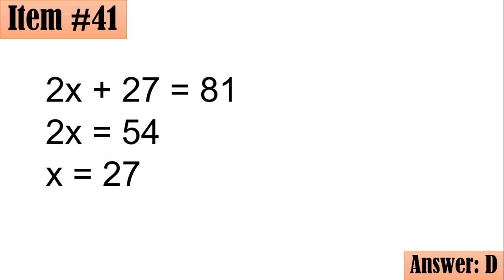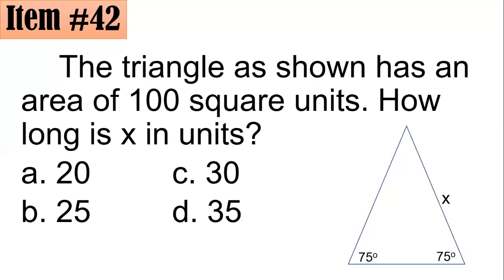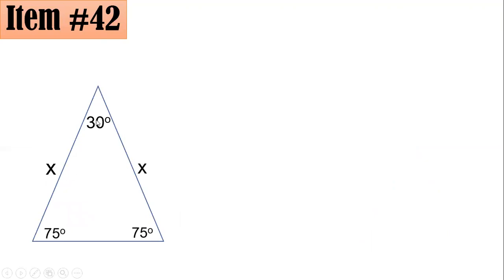Item 42. The triangle as shown has an area of 100 square units. How long is x in units? Did you go with 20, 25, 30, or 35? So you could see that you have here 75, 75, and this has to be 30. And this is isosceles. So therefore, this is also x here. That's why I have this figure now.